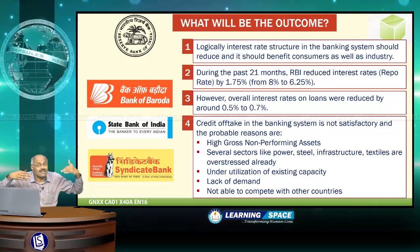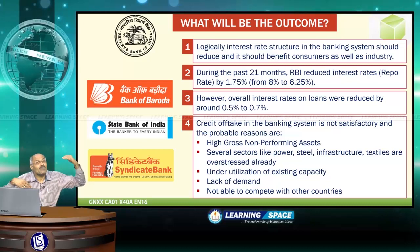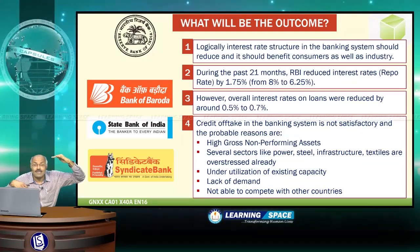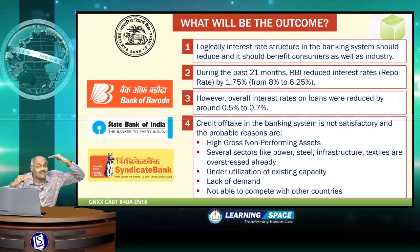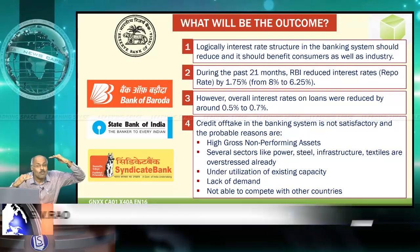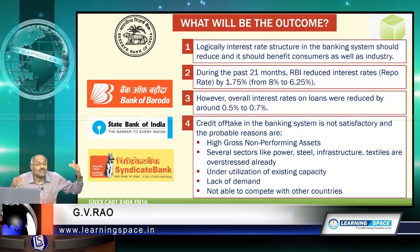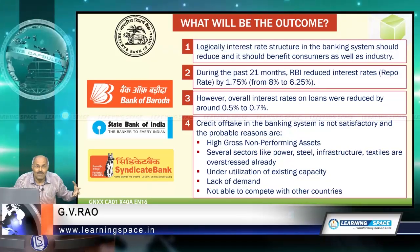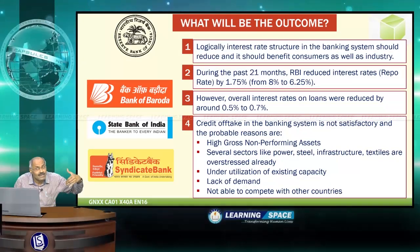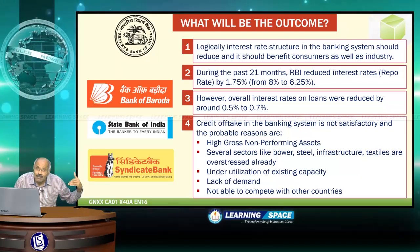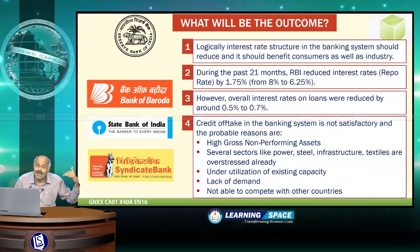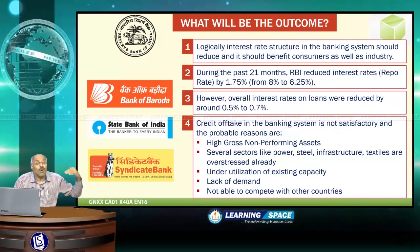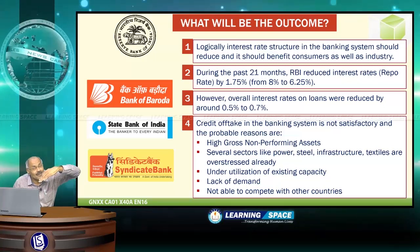Monetary transmission means that when RBI reduces the repo rate, it should have a similar effect on the loan rate structure. Because of several reasons, monetary transmission is not taking place in this country in recent times. To ensure monetary transmission, RBI introduced MCLR — the marginal cost of funds-based lending rate — but even then monetary transmission is not taking place properly.